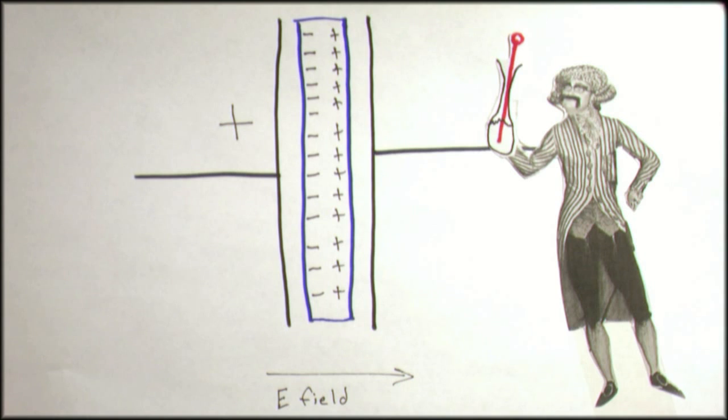Capacitors, also known as condensers, are devices that store an electric charge between two parallel metal plates. The plates are separated by a gap or a non-conductive dielectric material.